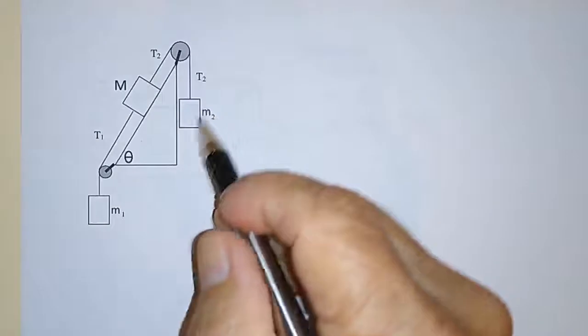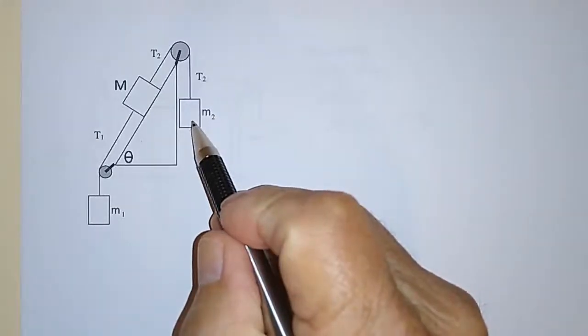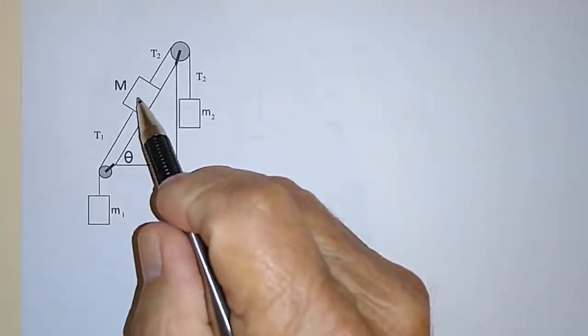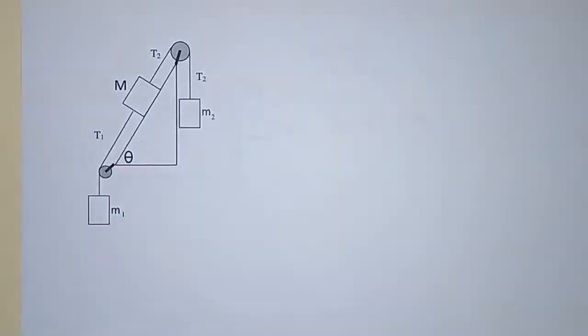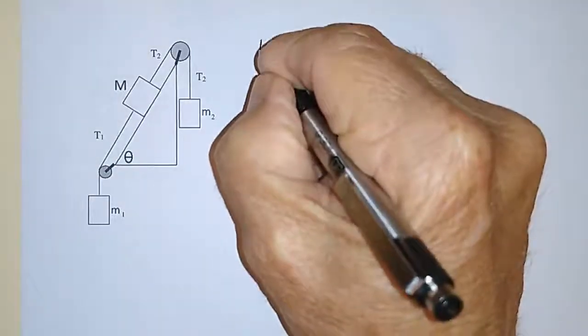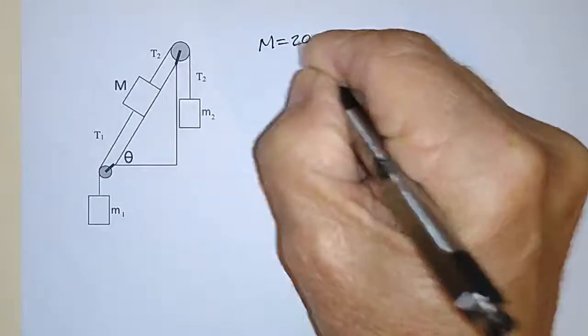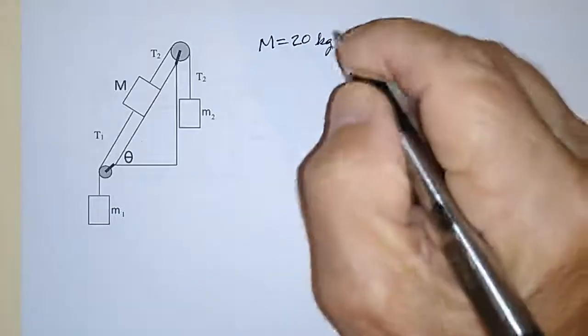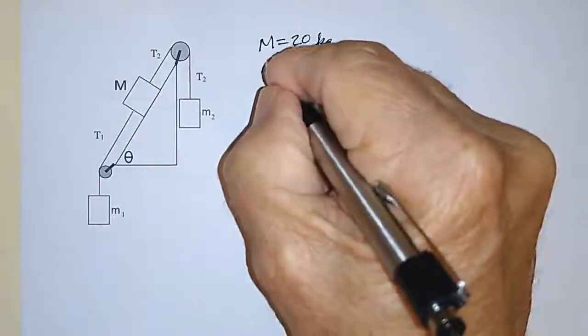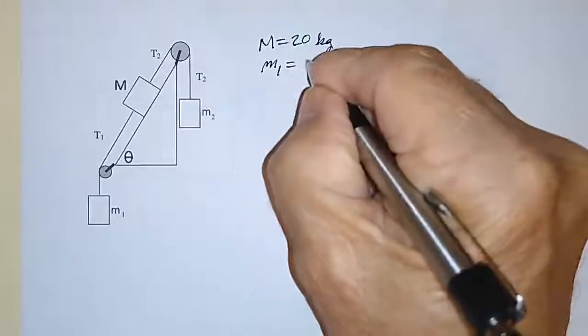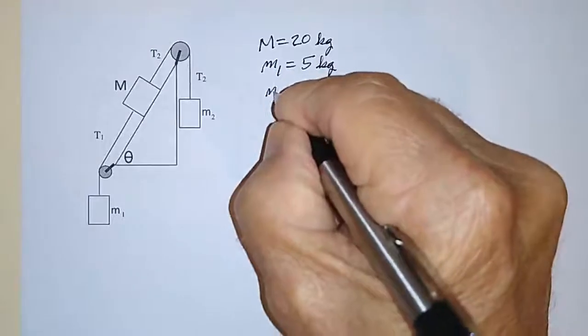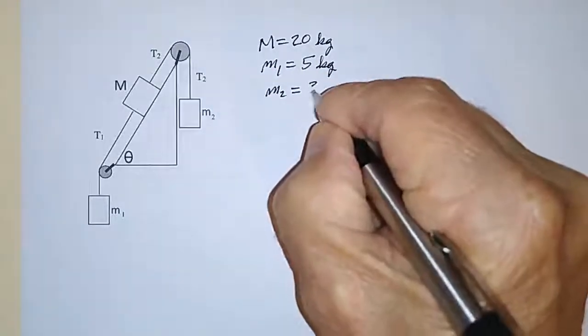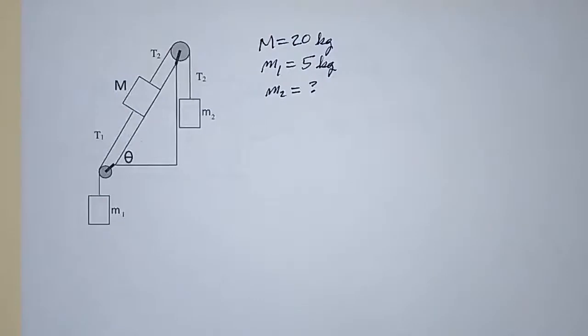So how do we figure out how big M2 has to be in order to keep big M from sliding, to keep the whole thing in a state of equilibrium? So I'll just remind you that M is equal to 20 kilograms and M1 was equal to 5 kilograms. So what we need to know is how big does M2 have to be in order to keep this thing in equilibrium?